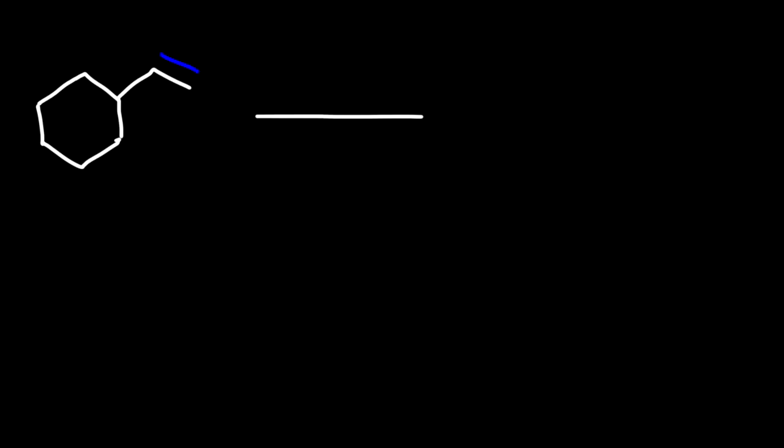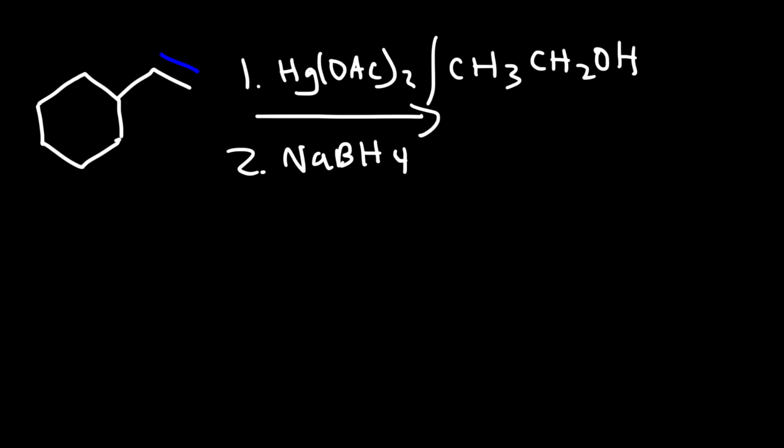So go ahead and try this problem. So instead of using methanol, let's use ethanol. So what will be the major product in this reaction? Now we're not going to get any rearrangements in this reaction, even though we have a tertiary carbon adjacent to the alkene. So like the other reactions, this reaction will proceed with Markovnikov addition. So we need to add the alcohol to the secondary carbon, the most substituted carbon on that double bond.